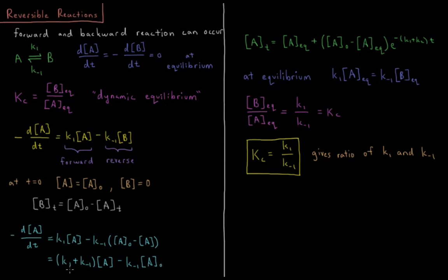Separating variables and integrating, the integrated rate law gives us the concentration of A as a function of time equal to the equilibrium concentration of A plus the initial concentration of A minus the equilibrium concentration of A, times e to the minus (K1 plus K-1) times T.